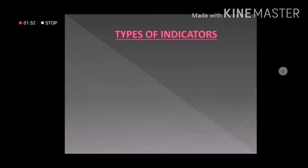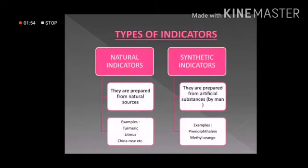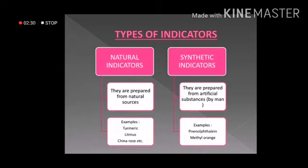Let us discuss the types of indicators. We broadly classify indicators into two groups: natural indicators and synthetic indicators. Natural indicators are prepared from natural sources. Some examples of natural indicators are turmeric, litmus, china rose, red cabbage, and some more. Synthetic indicators are prepared in factories using artificial substances. Some examples of synthetic indicators are phenolphthalein and methyl orange.